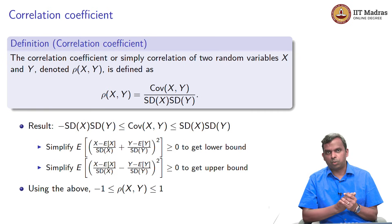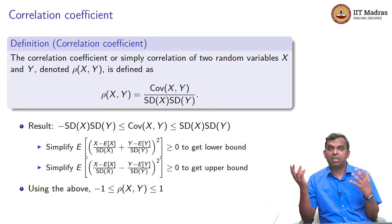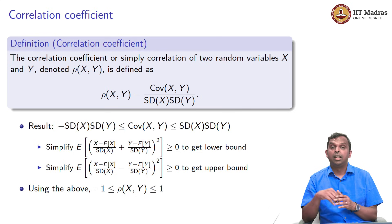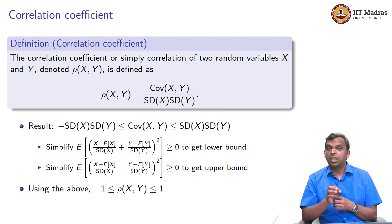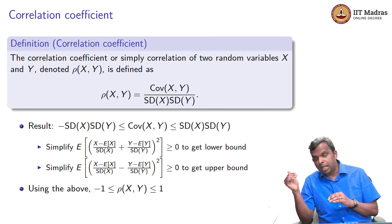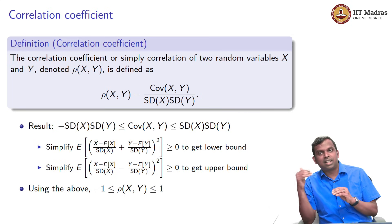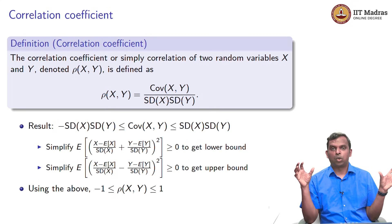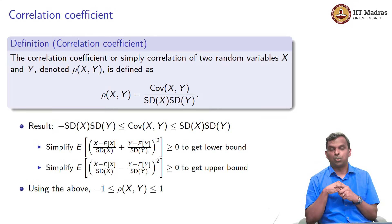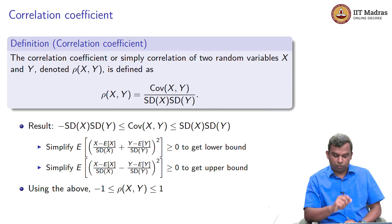Whatever the random variables x and y may be, the covariance might be very large, but it is still bounded by the standard deviations. When you divide by the product of the standard deviations, you get a dimensionless quantity that lies between minus 1 and 1. If rho of xy is equal to 0, it is uncorrelated. If rho of xy tends to 1, it is very positively correlated. If rho of xy tends to minus 1, it is very heavily negatively correlated. So the value of rho also tells you the extent of the correlation.